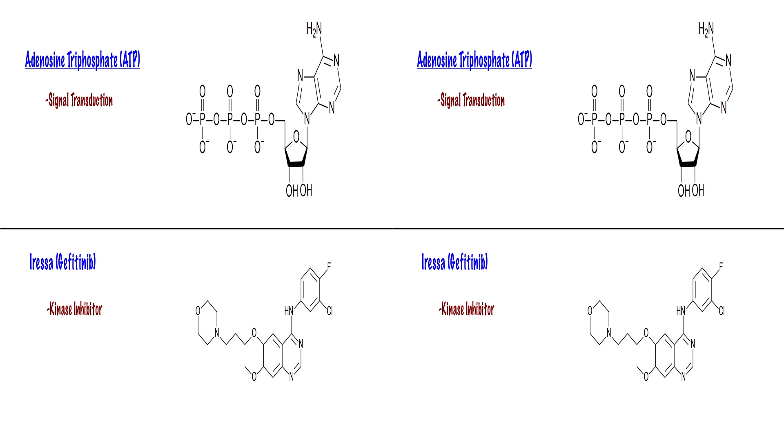The drug Iressa or Gefitinib is a tyrosine kinase inhibitor that blocks the binding of ATP and thus prevents phosphorylation. Although it is similar in size, Iressa does not resemble the structure of the ATP molecule, but the drug binds in the ATP binding pocket and prevents the protein from phosphorylation.